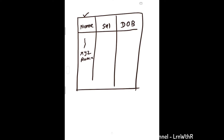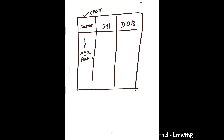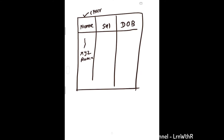To impose this rule on the name column — that only characters can come — we use a data type. We can use CHAR, VARCHAR2, and so on. There are many character data types available, which we will discuss later.